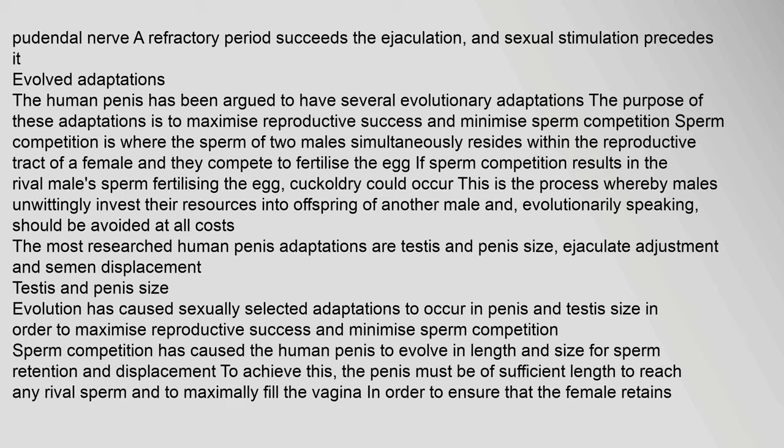The human penis has been argued to have several evolutionary adaptations, the purpose of which is to maximize reproductive success and minimize sperm competition. Sperm competition is where the sperm of two males simultaneously resides within the reproductive tract of a female, competing to fertilize the egg. If sperm competition results in the rival male's sperm fertilizing the egg, cuckoldry could occur — the process whereby males unwittingly invest resources into offspring of another male.